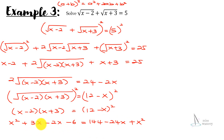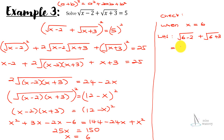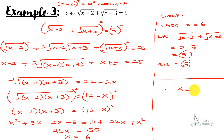Bringing x terms together: x + 24x = 25x, and constants give 144 + 6 = 150. So 25x = 150, meaning x = 6. Checking: left-hand side gives √4 + √9 = 2 + 3 = 5, which equals the right-hand side. So x = 6 is confirmed.